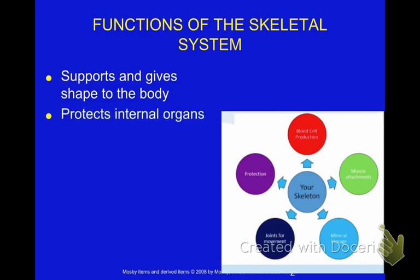Protection of internal organs. What structures are responsible for protecting internal organs? What do you think of when you think of protecting internal organs? The rib cage — we have, for sure, the ribs. And what do the ribs protect? The lungs and the heart.